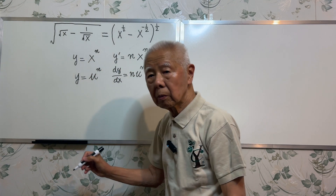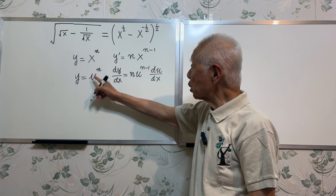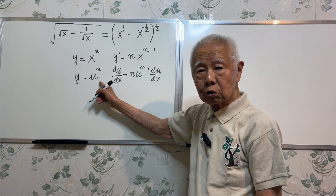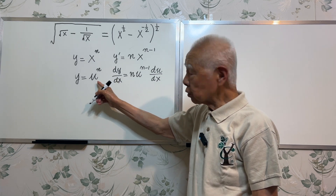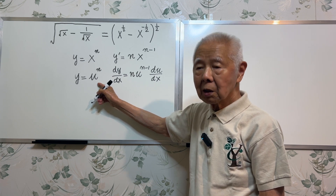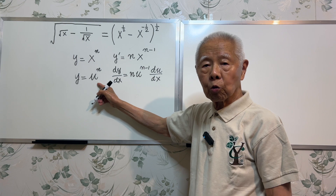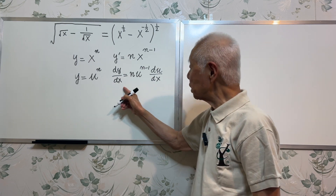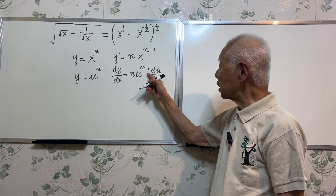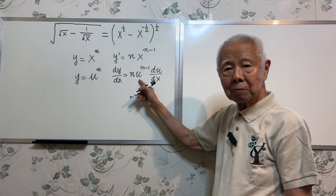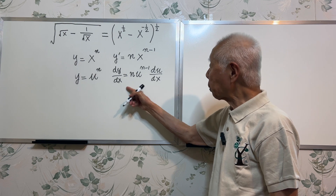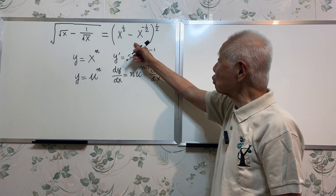This is the power rule. Now I do not have x to the power n — I have u to the power n, and u is itself a function of x. The derivative of y with respect to x uses this formula. The first part is the power rule, and the next part is the chain rule. So we need to apply this formula to the given function.